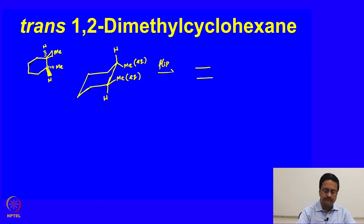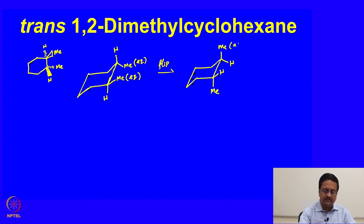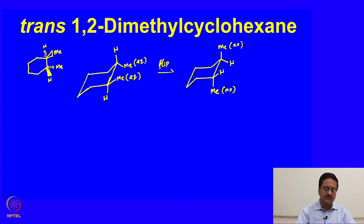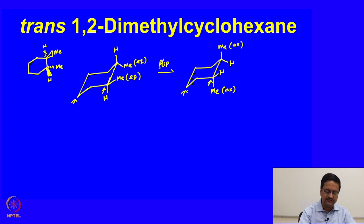When we flip trans-1,2-dimethylcyclohexane, the methyl here would go up, hydrogen here will come down, this hydrogen will go up and this methyl will come down. So it becomes di-axial from di-equatorial. Let us now draw the Newman projection of these two conformations, looking at those bonds as we had done in the previous case, numbering those atoms as usual.